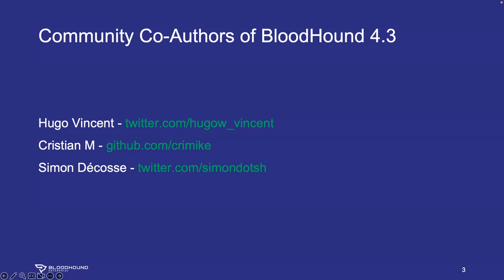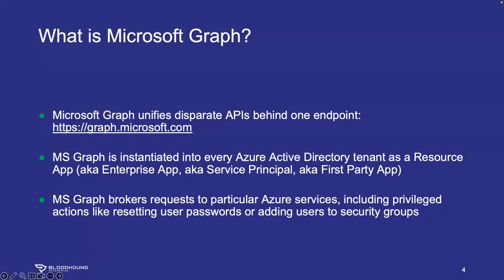The headline for this release is Microsoft Graph support. Microsoft Graph is kind of an API for APIs — it unifies disparate APIs behind this one graph.microsoft.com endpoint. You can access Azure AD and Office 365 objects through this one unified API. Every single Azure Active Directory has Microsoft Graph instantiated into it as a resource app, also known as an enterprise app, a service principal, or a first party app. It exists everywhere — every Azure AD tenant has an MS Graph.